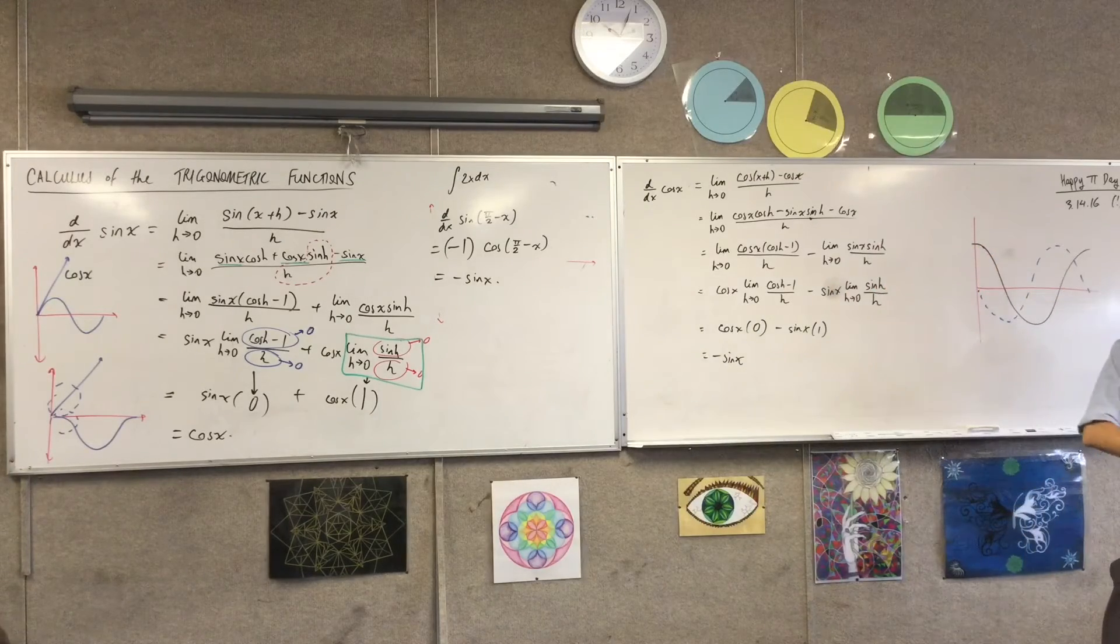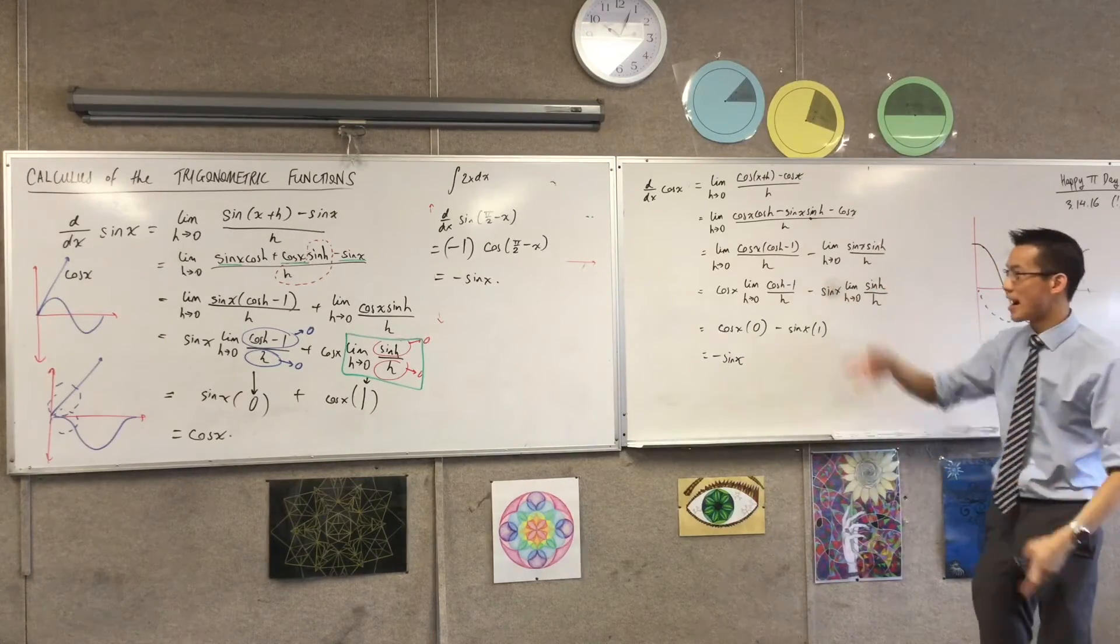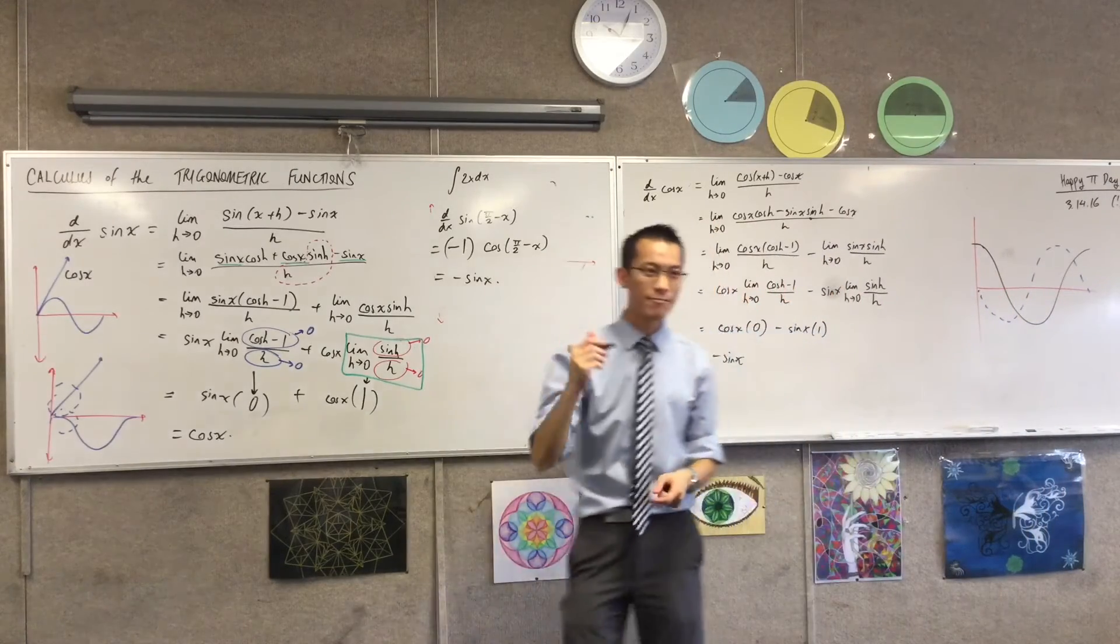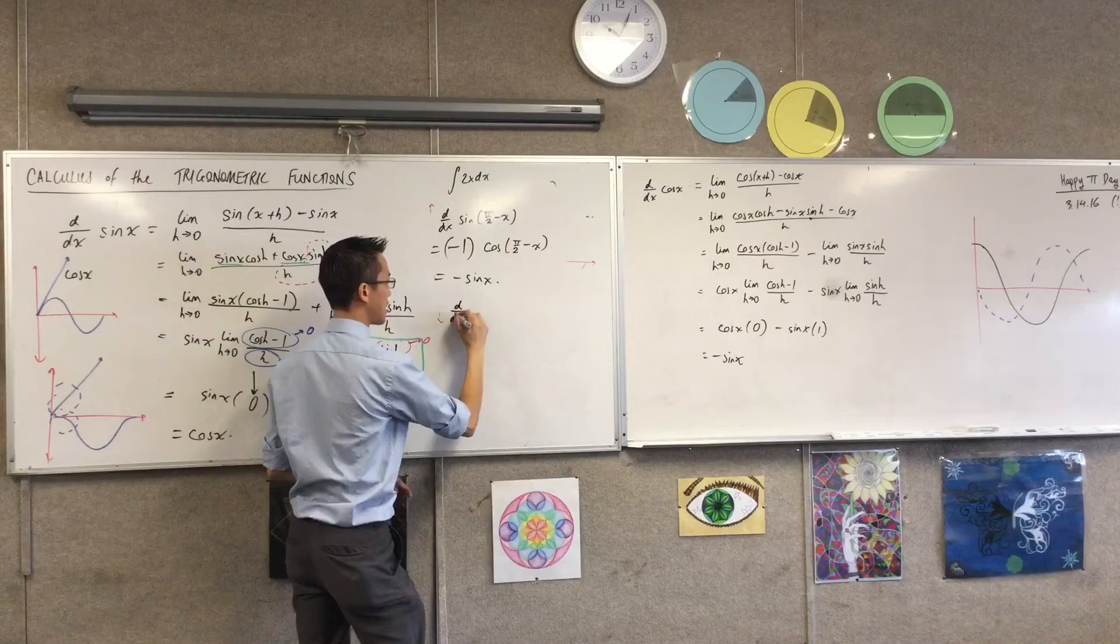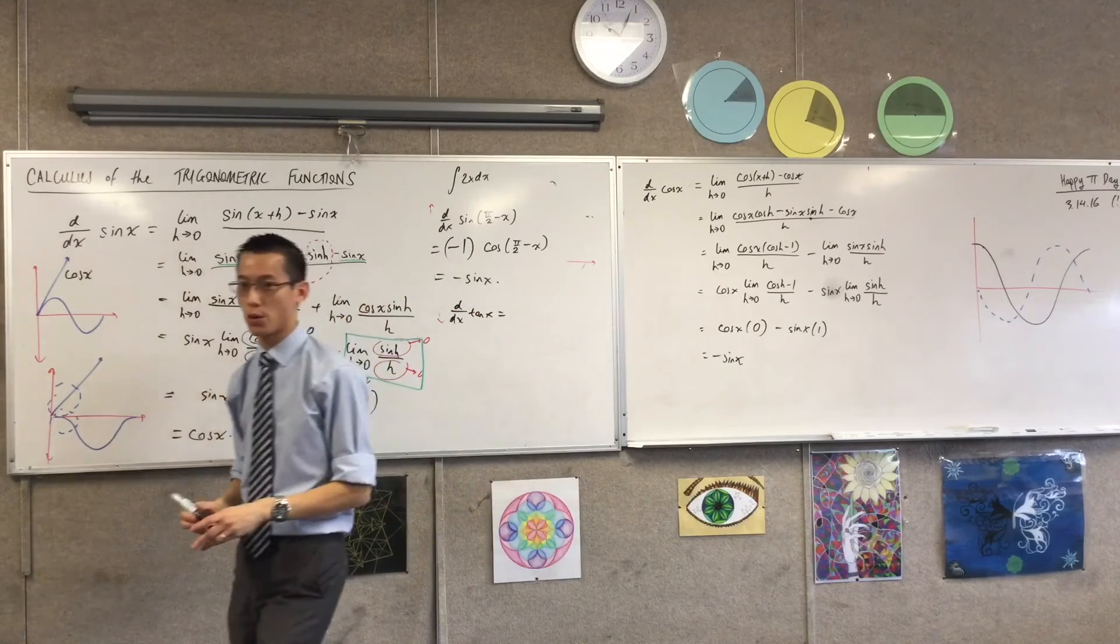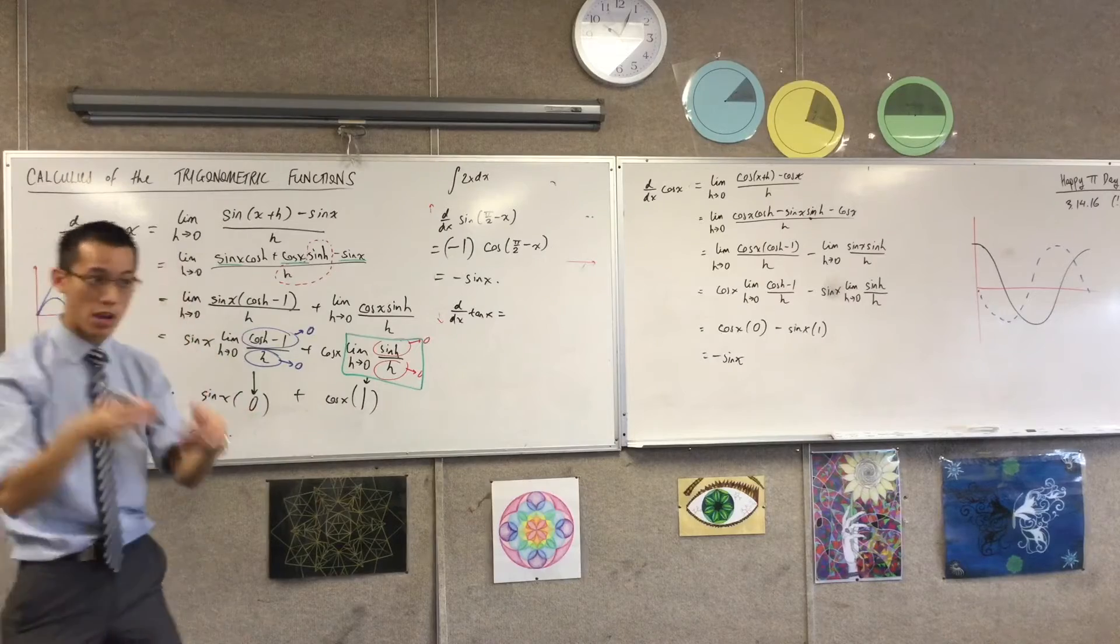Okay? Now one last result. We got sine in first principles. We did cosine either the long way or you went to chain rule. Tan, of course. Now tan falls out pretty quickly when you remember that tan, of course, is just defined as sine over cos.